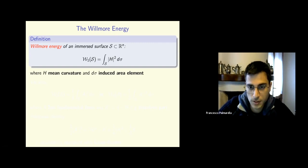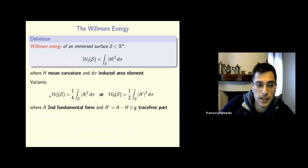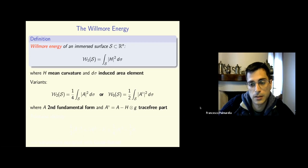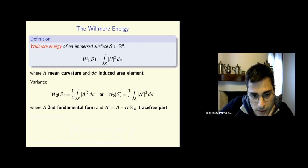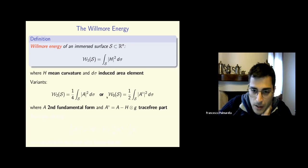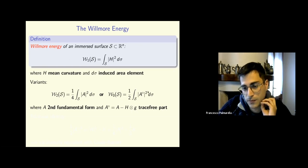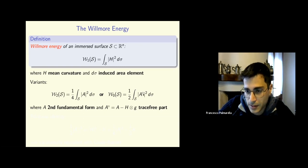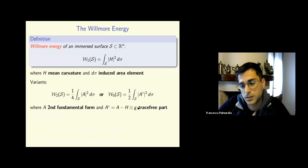The Willmore energy of an immersed surface S into Euclidean space — and for me an immersed surface is always 2D — is classically the integral of the norm squared of the mean curvature with respect to the induced area element. It's a quantity that really depends on how this surface, for instance sphere, torus, and so on, is immersed.